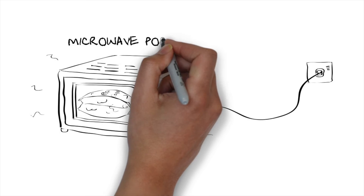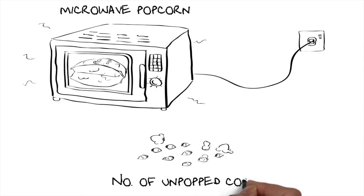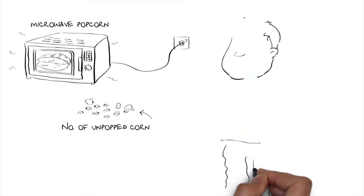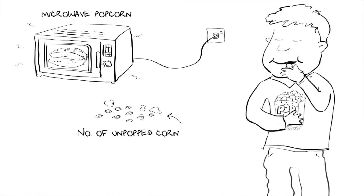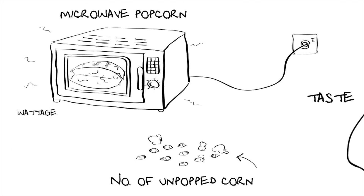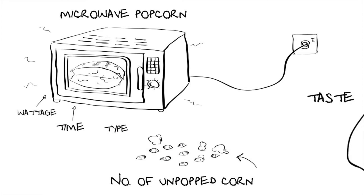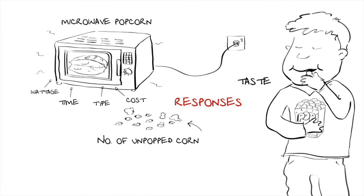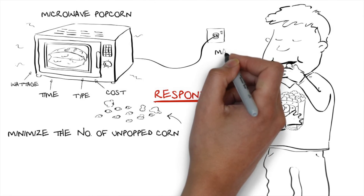Let's consider the process of making microwavable popcorn. There are two responses in this process: one is the number of unpopped corn kernels that remain at the end of the process, and the other is the actual taste associated with the popcorn. There are a number of factors or inputs to this process: the wattage or power, the time, the type of popcorn that we use, and the cost of the popcorn. The responses are the number of unpopped corn and the taste.